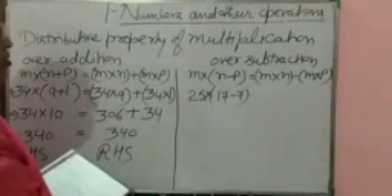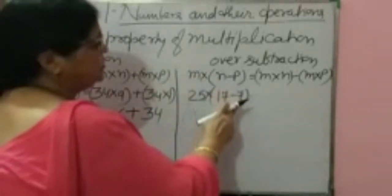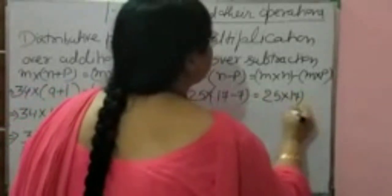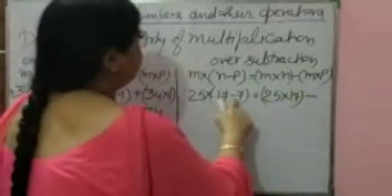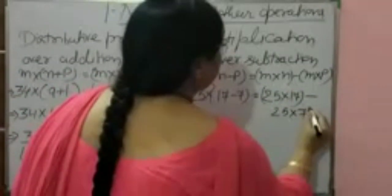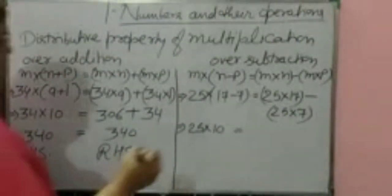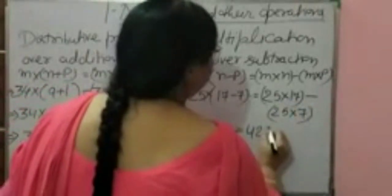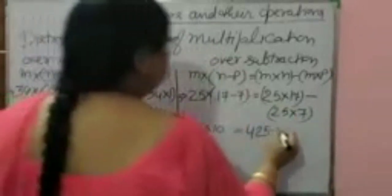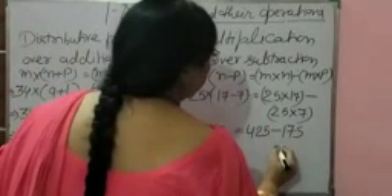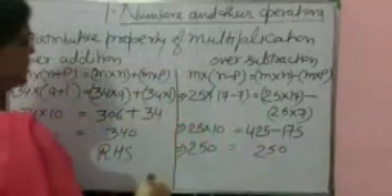Now over subtraction. The question is 25 multiplied by (17 minus 7). Left hand side: 25 multiplied by (17 minus 7) equals 25 multiplied by 10 equals 250. Right hand side: 25 multiplied by 17 minus 25 multiplied by 7 equals 425 minus 175 equals 250. LHS equals RHS.